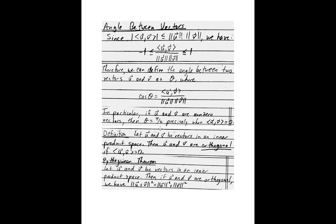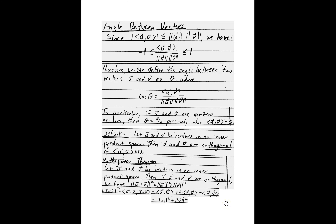Orthogonality leads us to a proof of the Pythagorean theorem. If u and v are orthogonal, we can show that the magnitude squared of u plus v equals the magnitude of u squared plus the magnitude of v squared — that is, a squared plus b squared equals c squared. The proof follows the same approach: take the magnitude squared, write it as the inner product with itself, distribute (foil), and since u and v are orthogonal their inner product is zero, leaving us with magnitude of u squared plus magnitude of v squared.